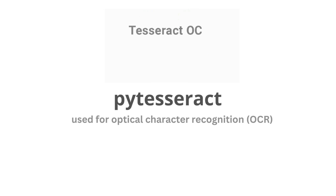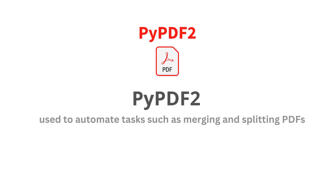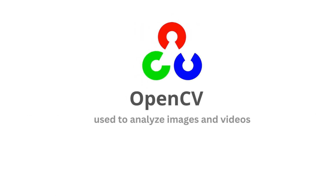In Automation Anywhere, the IQ Bot does the same thing. Next is PyPDF. This library works with PDF files and can be used to automate tasks such as merging and splitting PDF files. It is also helpful for extracting text and images from PDF files.